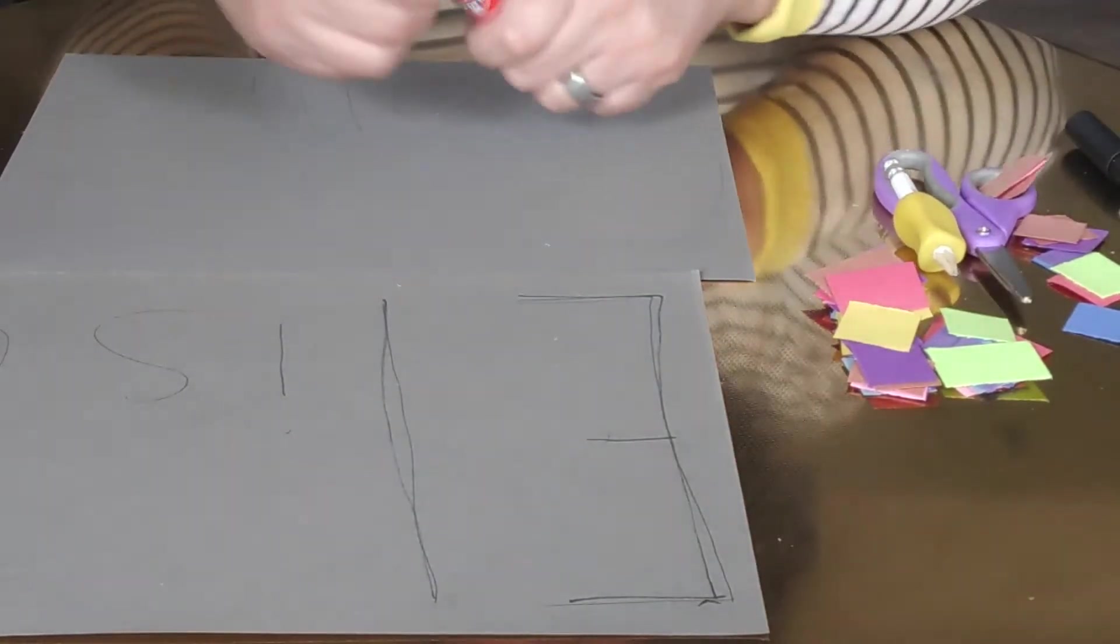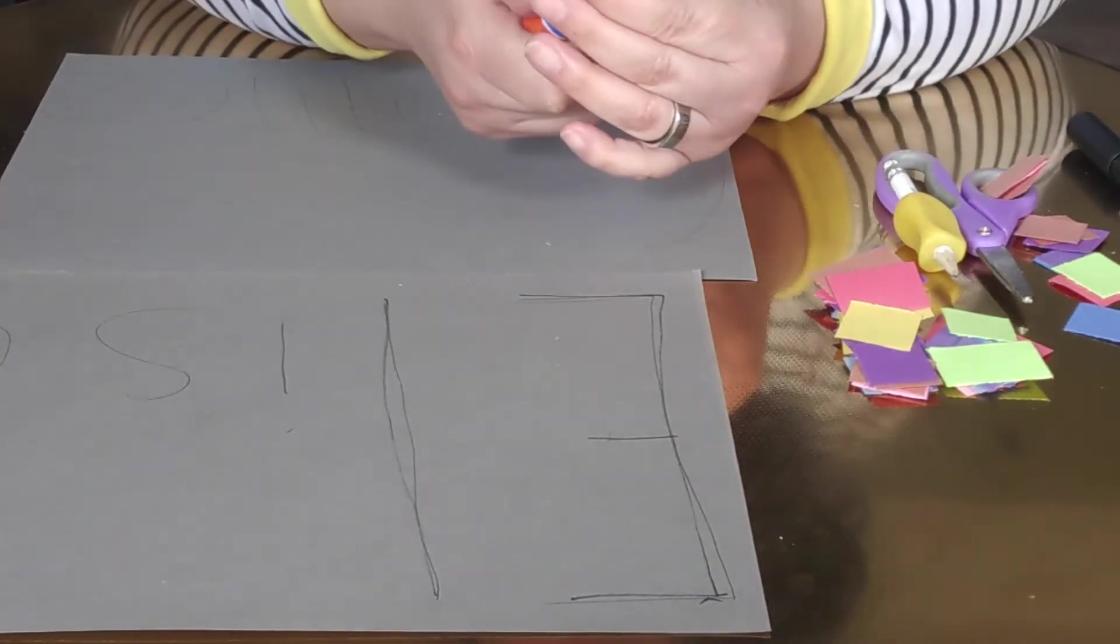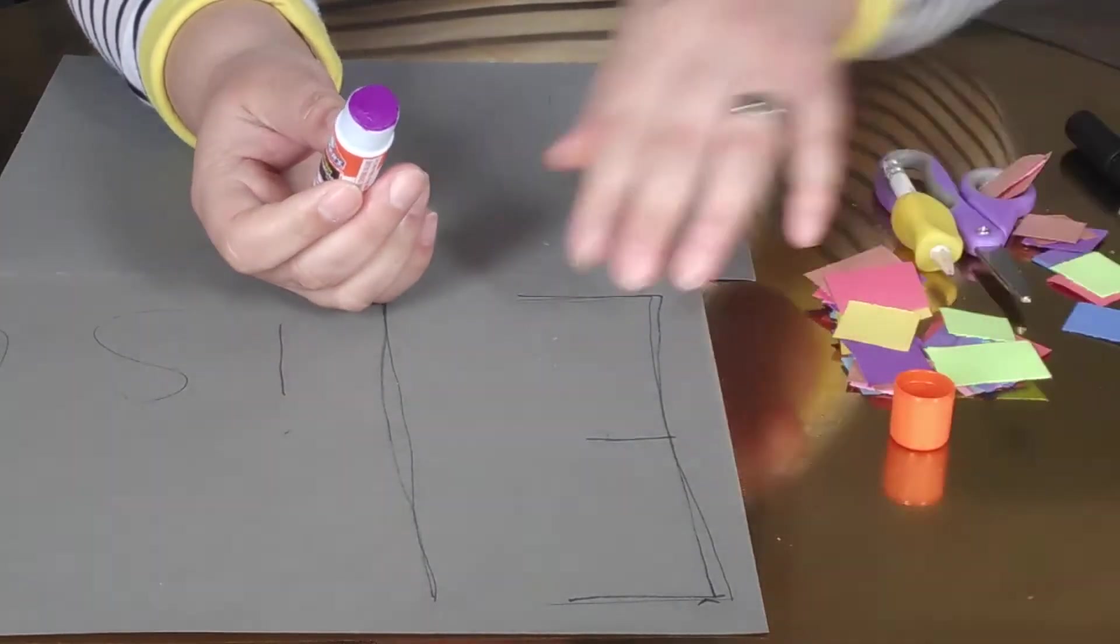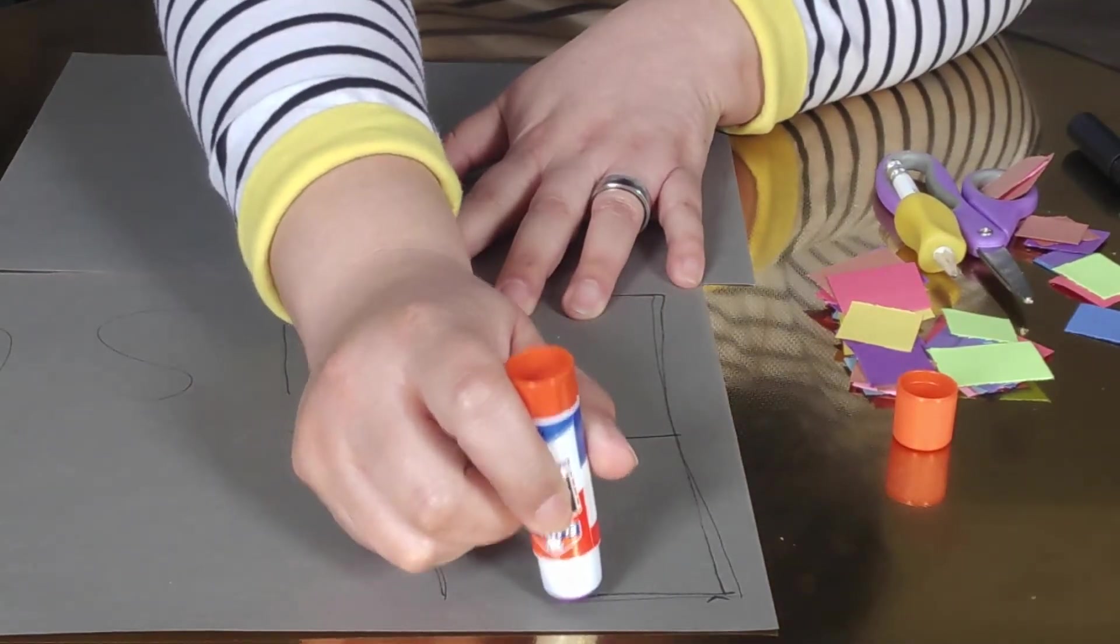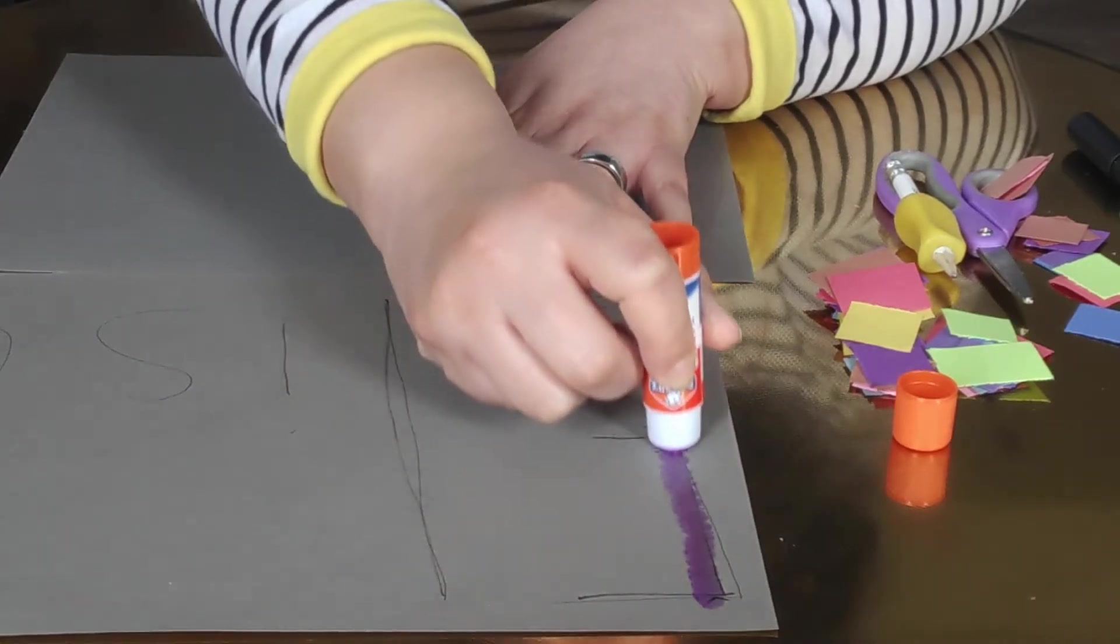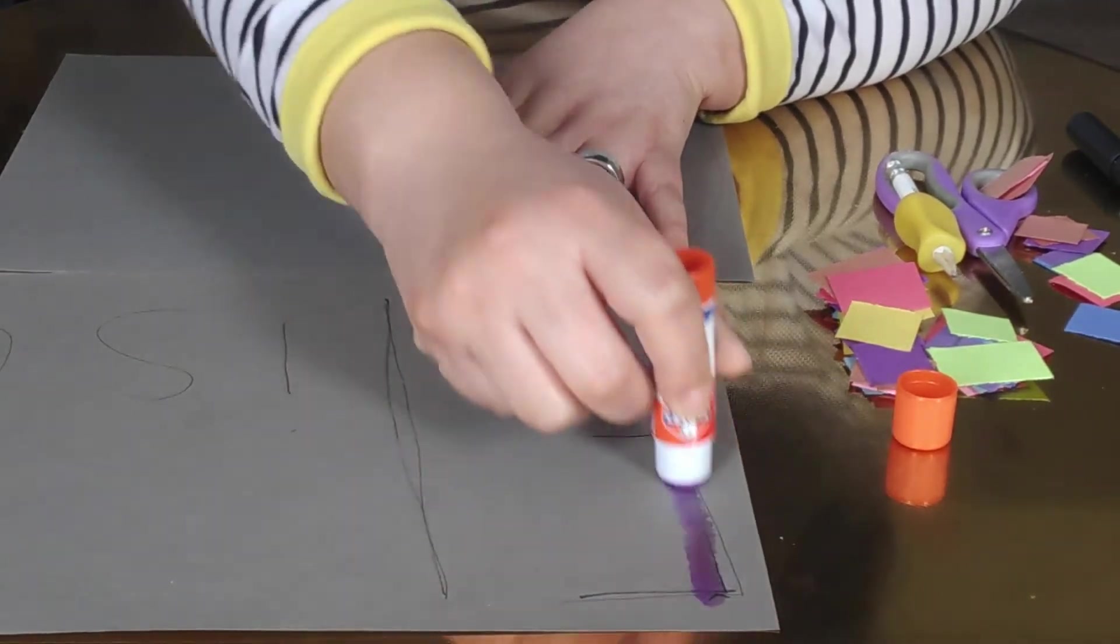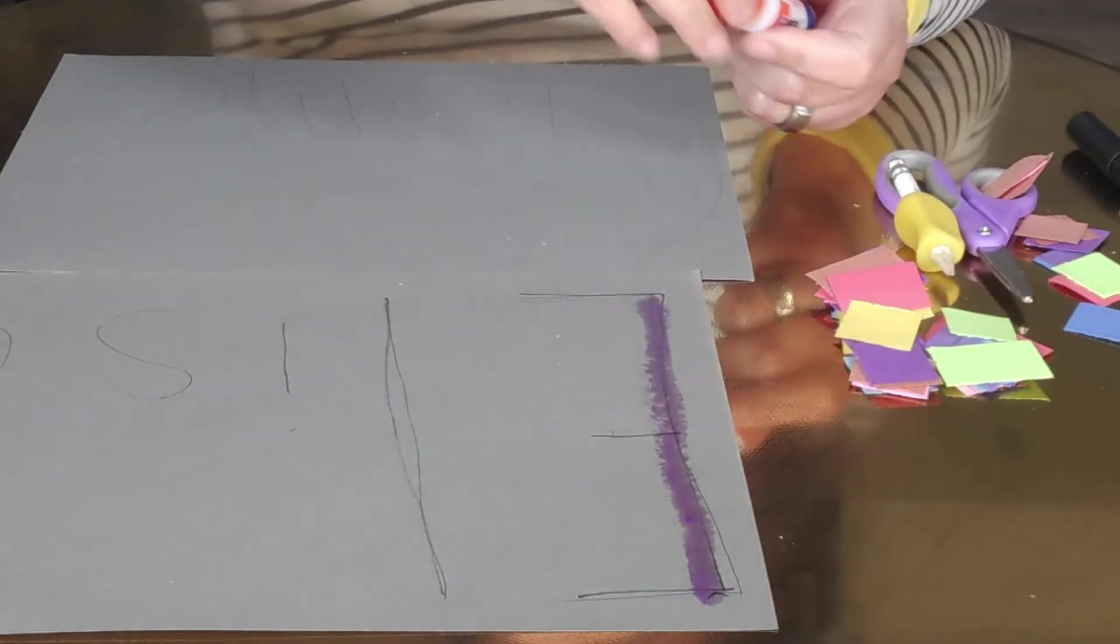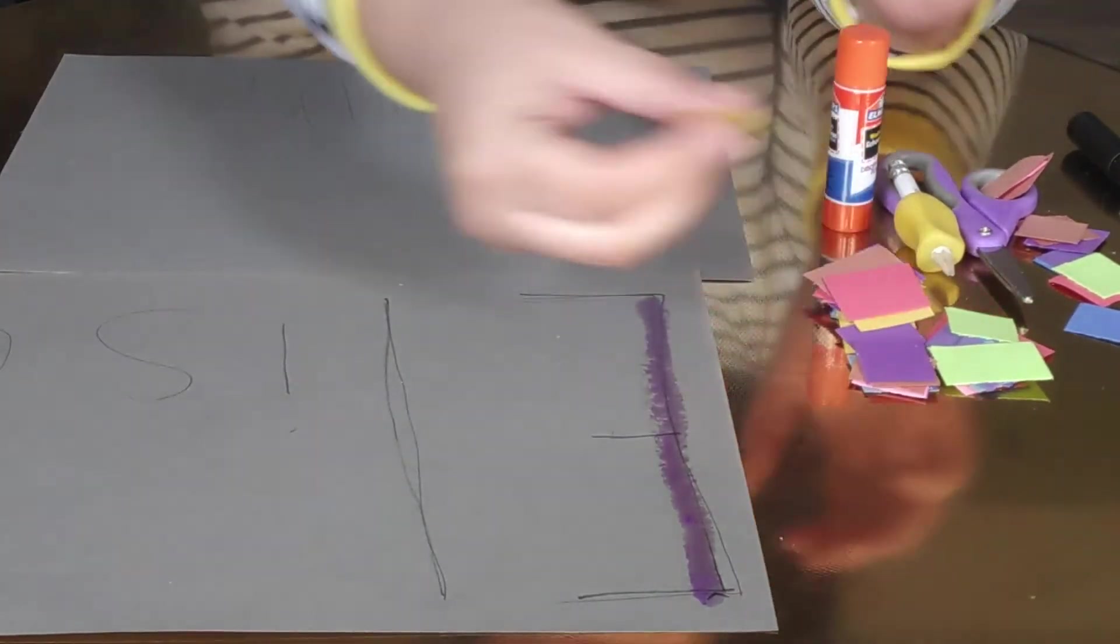Okay, next you're going to glue. So have your child open the cap, put the cap down, and start with one strip. Start with the top. Make your big line down.